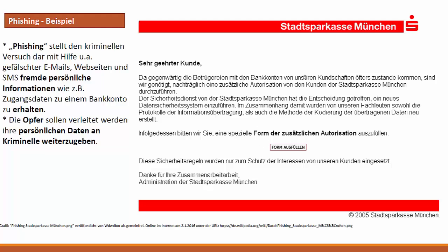Ein Beispiel für Phishing zeigt diese Mail aus Wikipedia: Es wird versucht, das Opfer dazu zu bringen, Informationen über sein eigenes Bankkonto weiterzugeben. Das ist sehr täuschend echt gemacht – wenn man draufklicken würde, käme man zu einer Seite, die wie die einer Sparkasse aussieht, und man würde unter Umständen die eigenen Kontodaten preisgeben. In der Realität versuchen Banken niemals per Mail, persönliche Daten zu erhalten – auf solche Nachrichten nicht antworten, da es sich sehr wahrscheinlich um Phishing handelt.